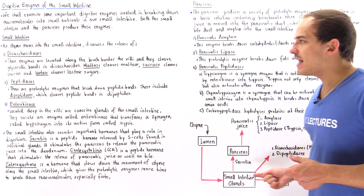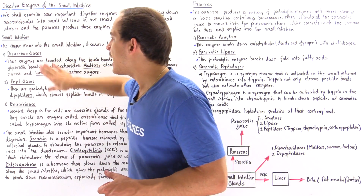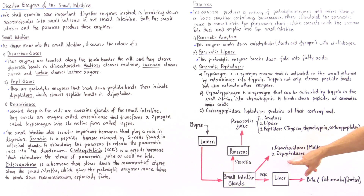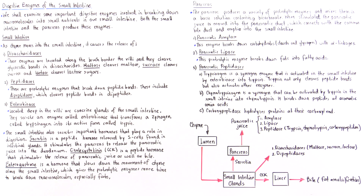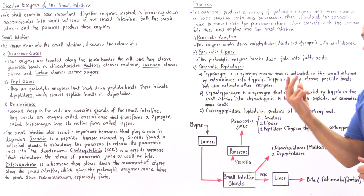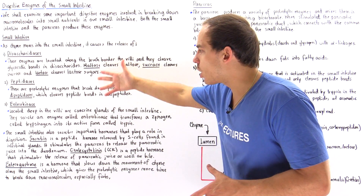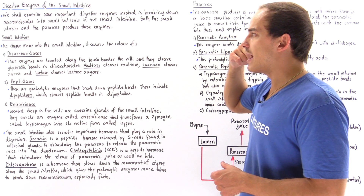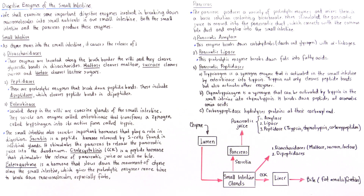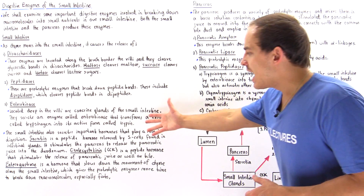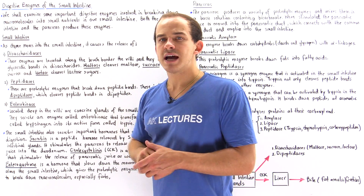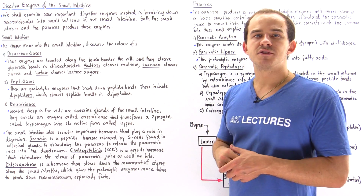We also have the stimulation of proteolytic enzymes found at the brush border: disaccharidases such as maltase, sucrase, and lactase, and dipeptidases which break down peptides consisting of only two amino acids. So these are the proteolytic enzymes produced by the small intestine, the proteolytic enzymes produced by the pancreas, and the hormones produced by the small intestine that are involved in the process of digestion.